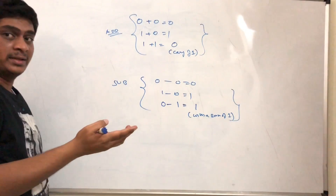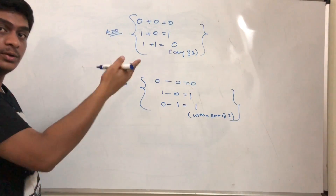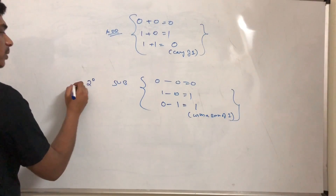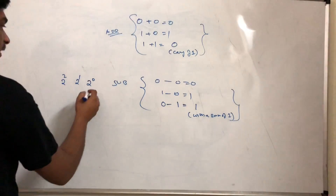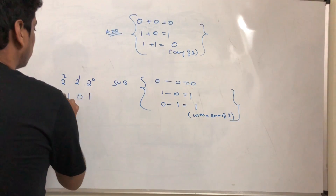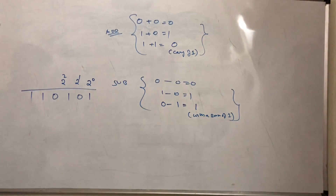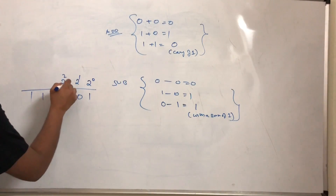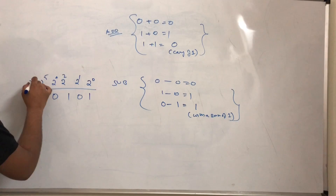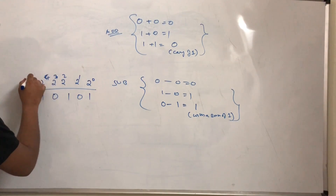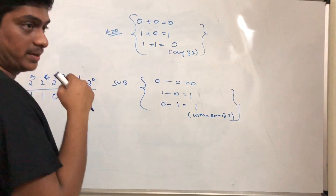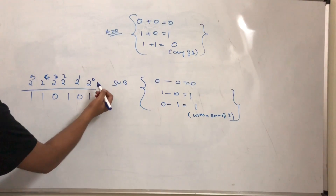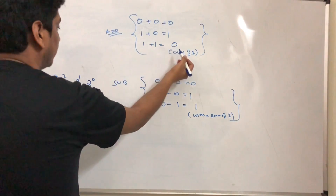How are you arriving at these results? It's based on place values: 2 power 0, 2 power 1, 2 power 2, and so on. So if my number is 1 0 1 0 1 1 and I need to convert it to decimal, the place value of each digit changes accordingly — that is the principle involved here.